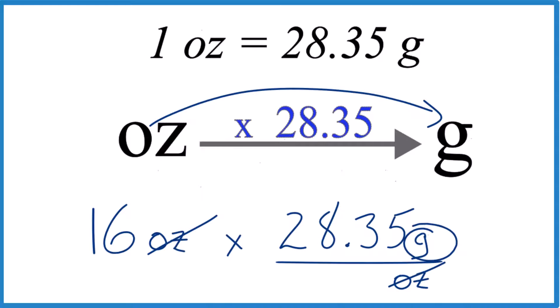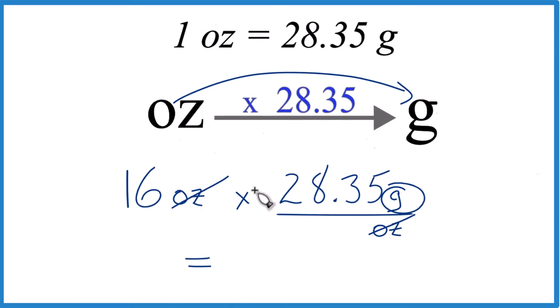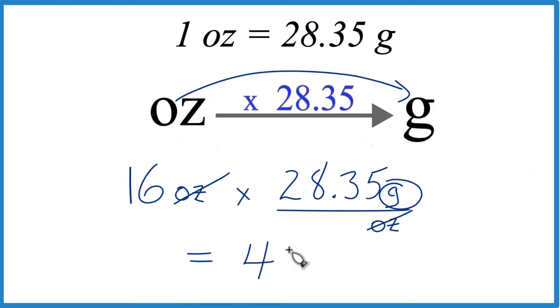So 16 times 28.35 grams, that equals 453.6. And the units, those are the grams there. That's how you convert 16 ounces to grams.